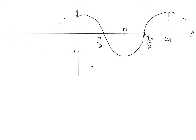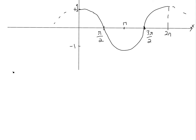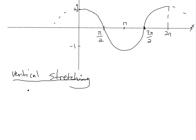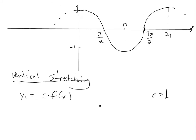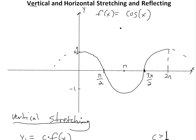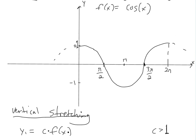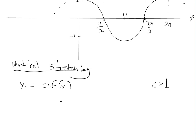So if we want to transform it, let's vertically stretch it. Vertical stretching: we want to graph y equals c times f of x, where c is greater than 1. So what this means is, for every value of f of x — in this case cosine — all we're doing is multiplying it by c. Let's go with example: c equals 2.